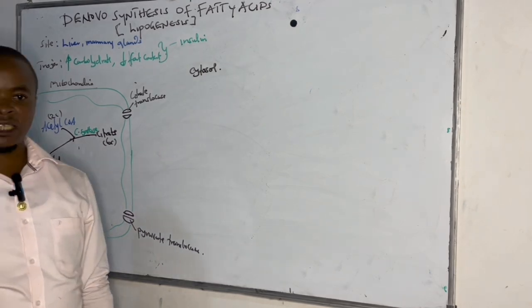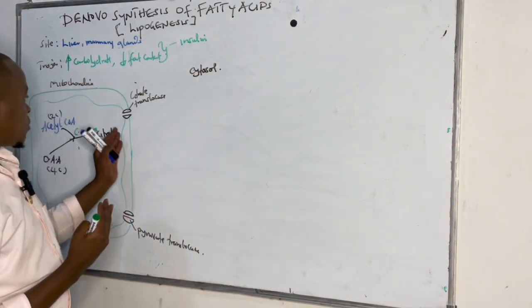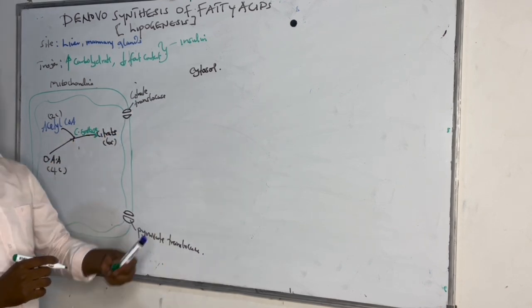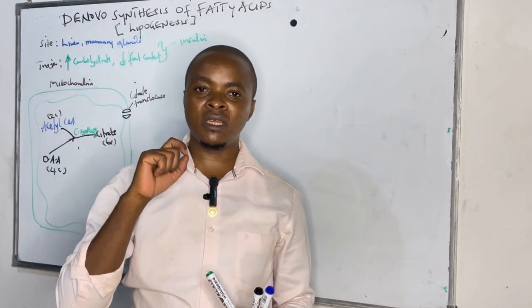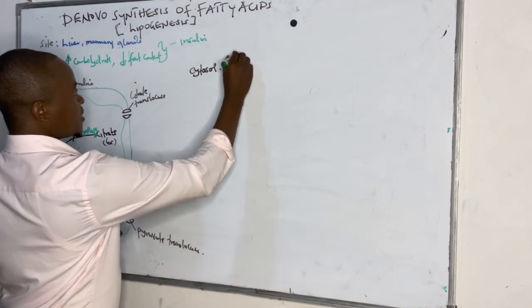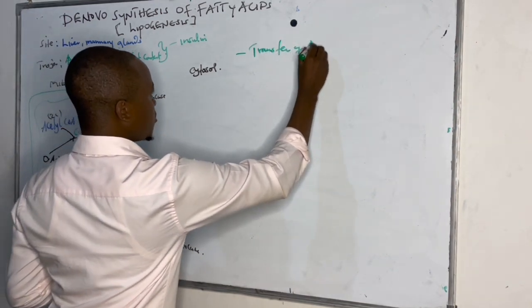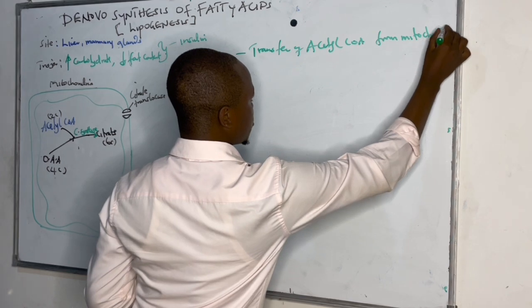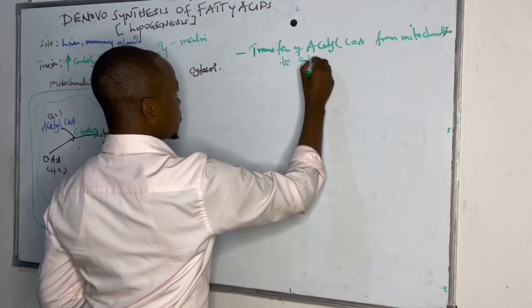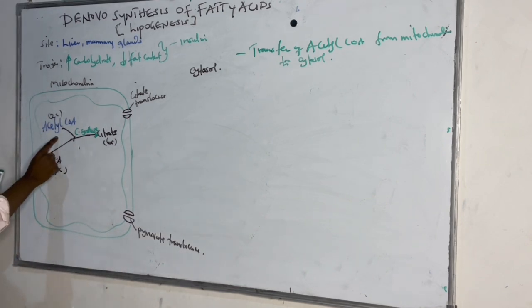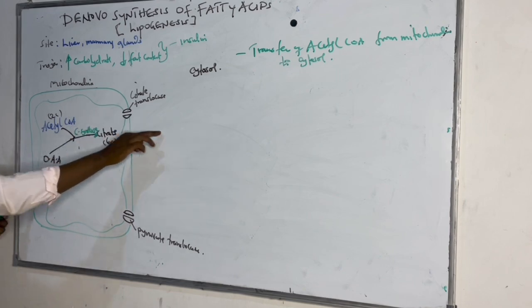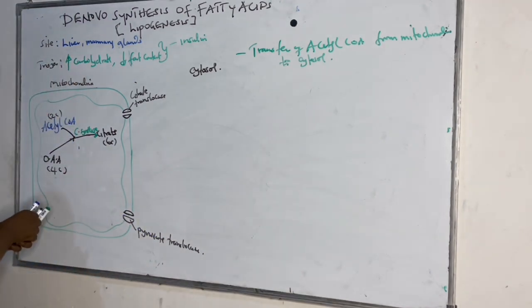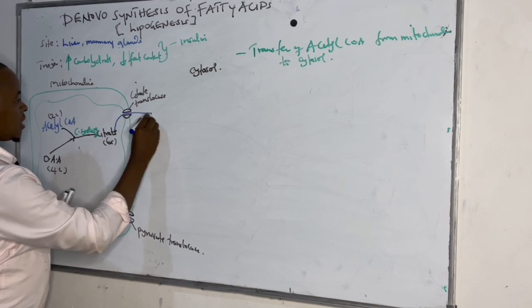Why are we forming citrate? It's because acetyl-CoA cannot cross the inner mitochondrial membrane. So to exit the mitochondria, we need citrate, so that it can be taken to the cytosol — because the first step in de novo synthesis is a transfer of acetyl-CoA from the mitochondrial matrix to the cytosol. This citrate is moved via citrate translocase into the cytosol.